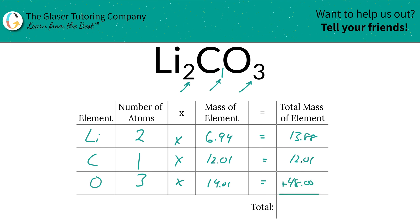That's what it looks like when your brain short circuits! When we add these all together, that's how we find the total mass of the entire compound. So the total mass here is going to be 73.89.